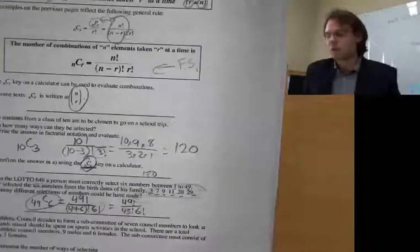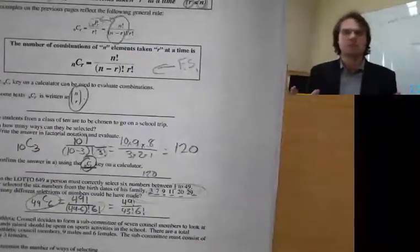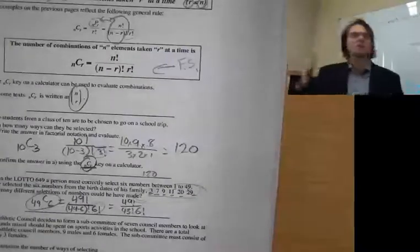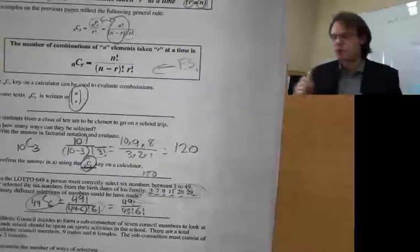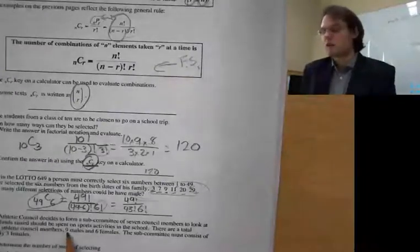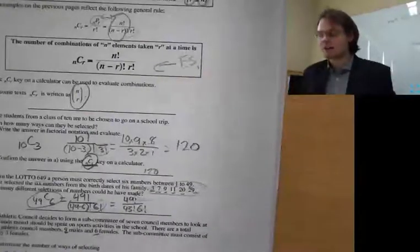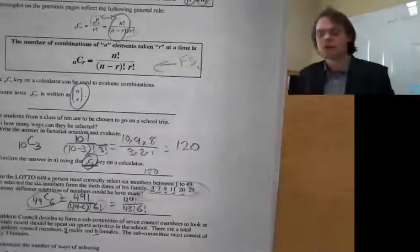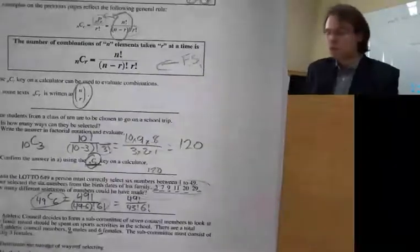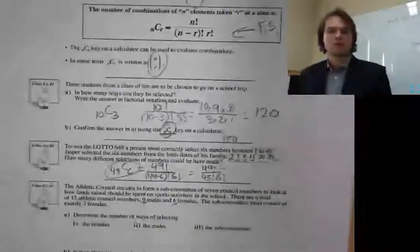Question example number 3: an athletic council decides to make a subcommittee of 7 members. There are 15 athletes on the council board — 9 males and 6 females. The subcommittee must contain exactly 3 females. We are now selecting only the females.